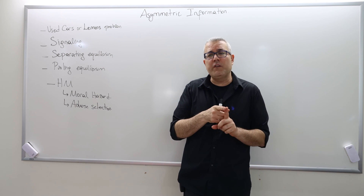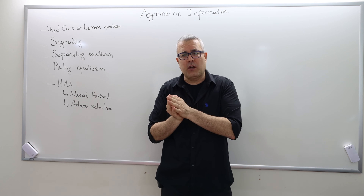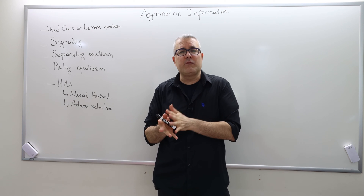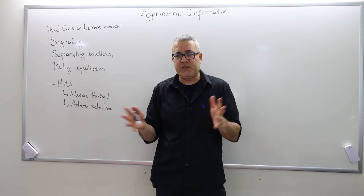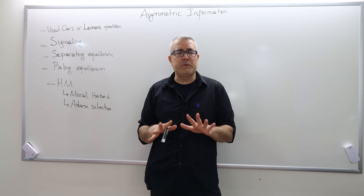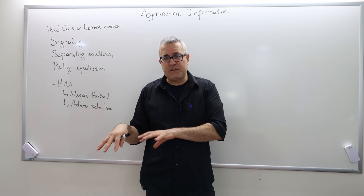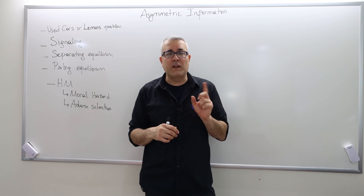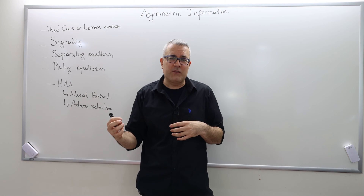So, asymmetric information. In Intermediate Microeconomics 1, we talked about the perfectly competitive market, where there are many buyers, many sellers, and so on. More importantly, the information is assumed to be symmetric — meaning everyone knows all the information available to everyone else. And in Intermediate Microeconomics 2, we talked about general equilibrium models and the first fundamental theorem of welfare economics, which basically says under some minor assumptions, the equilibrium outcome is pretty efficient.